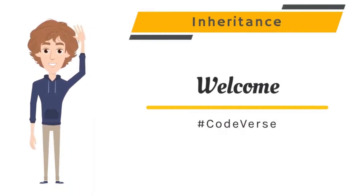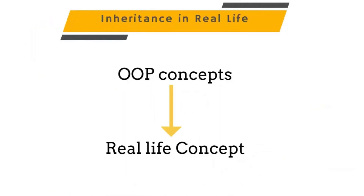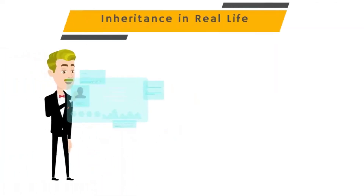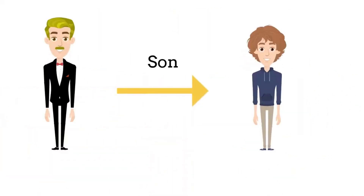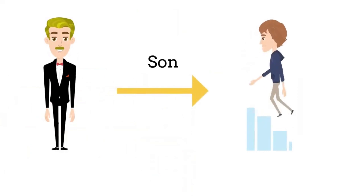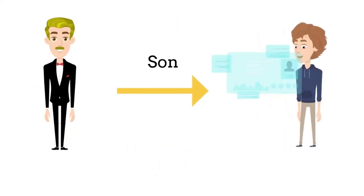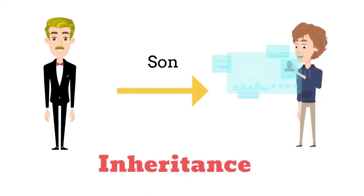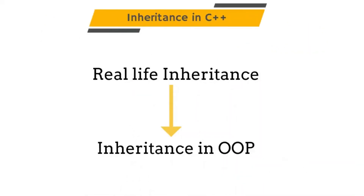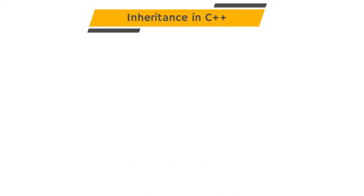Hello everyone, welcome to the Code Verse. In this video we will be learning about inheritance in C++. Most object oriented concepts are taken from real life. Consider Mukesh Ambani — he built Reliance Industries from scratch with a lot of effort and money. Now his son doesn't need to work from scratch to build his business; he can directly inherit his father's business, saving a lot of money and effort. This concept of inheriting property without starting from scratch is called inheritance.